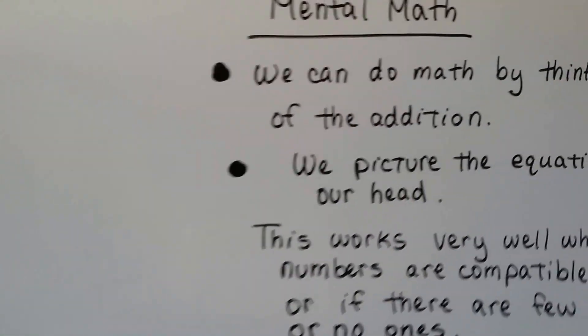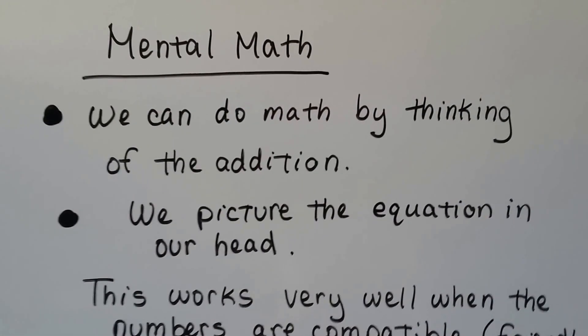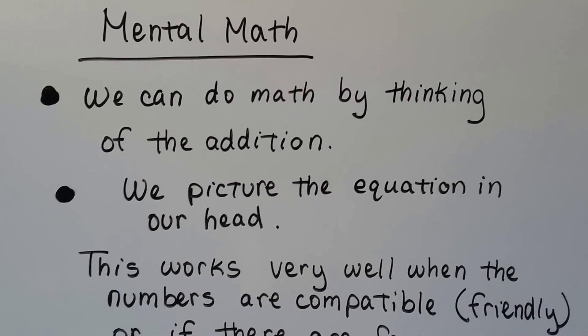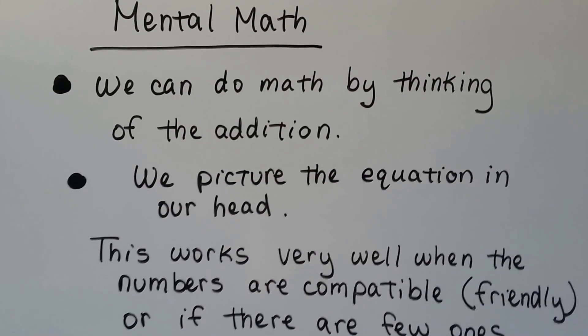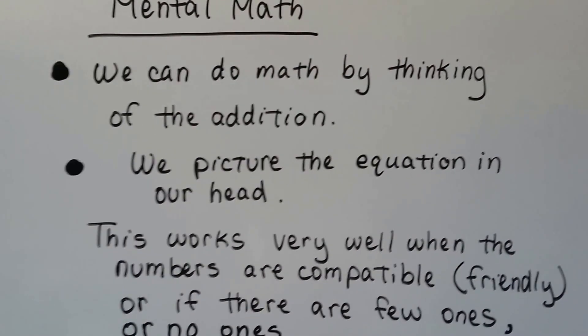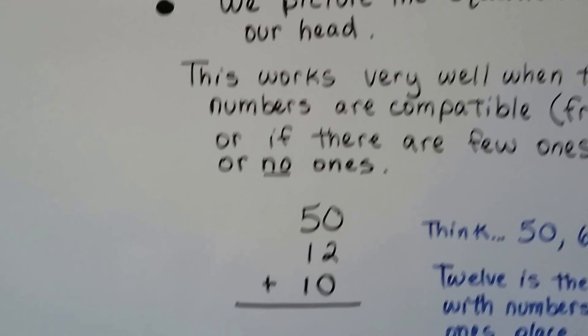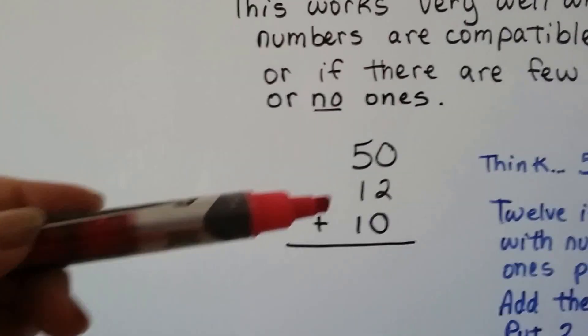Let's talk about some mental math. We can do math by thinking of addition. We picture the equation in our head. This works very well when the numbers are compatible. That means it's friendly, or if there's few ones or no ones. Look at this: 50 plus 12 plus 10.